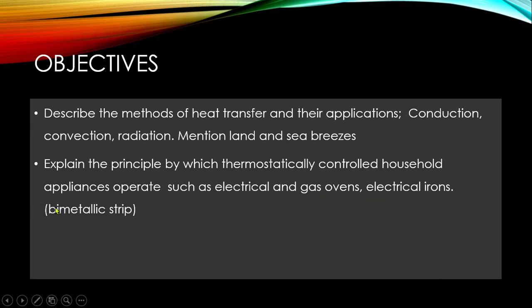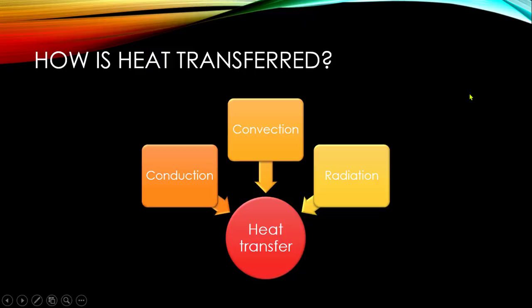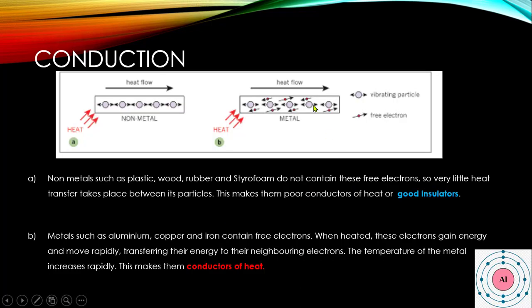Now, these items have something called a bimetallic strip, which we will be looking at in detail. How is heat transferred? There are three main methods of heat transfer: conduction, convection, and radiation. We will first look at conduction.